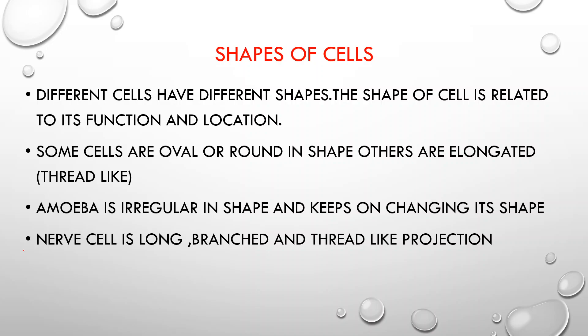Some cells are oval, some are round in shape, and certain cells are thread-like. Amoeba is irregular in shape and keeps changing its shape. The nerve cell is long, branched, and has thread-like projections. So if a question asks which cell is long, branched, and has thread-like projections, the answer is the nerve cell.